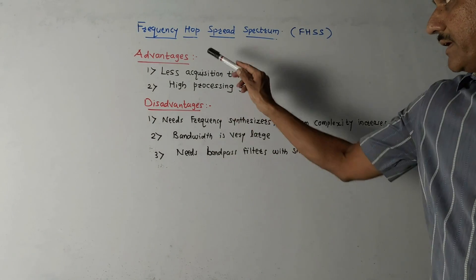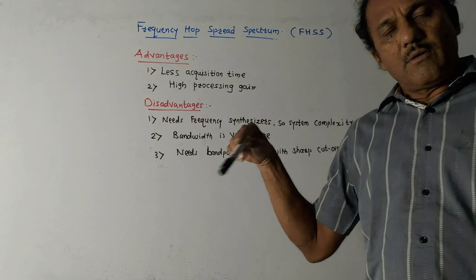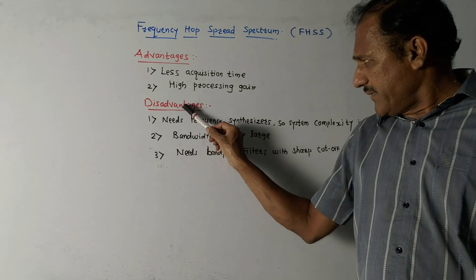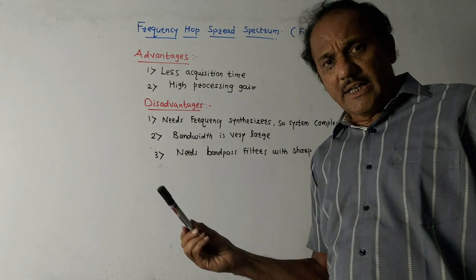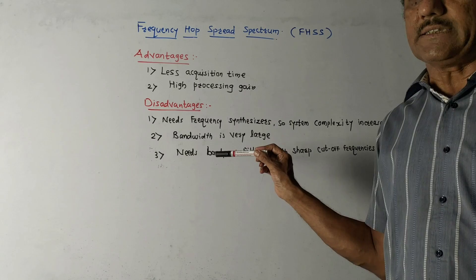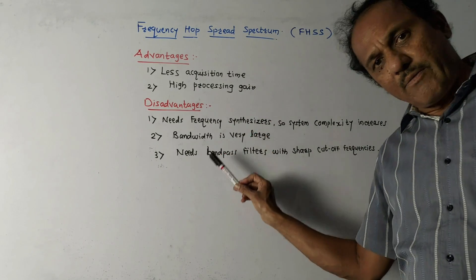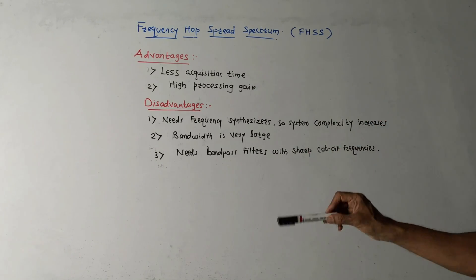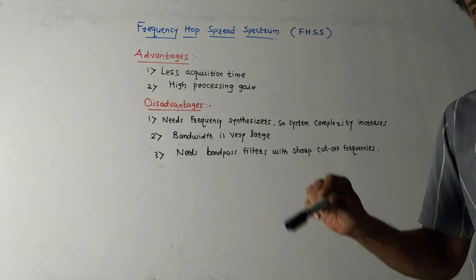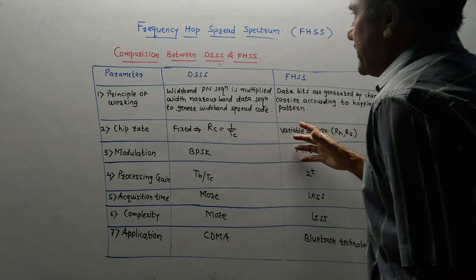Advantages of Frequency Hop Spread Spectrum: first, it requires less acquisition time; second, the processing gain is high compared to the DS system. Disadvantages: the system requires a frequency synthesizer in both the transmitter and receiver, so system complexity increases. Also, a very large bandwidth is required, and the bandpass filters used must have very sharp cutoff frequencies.